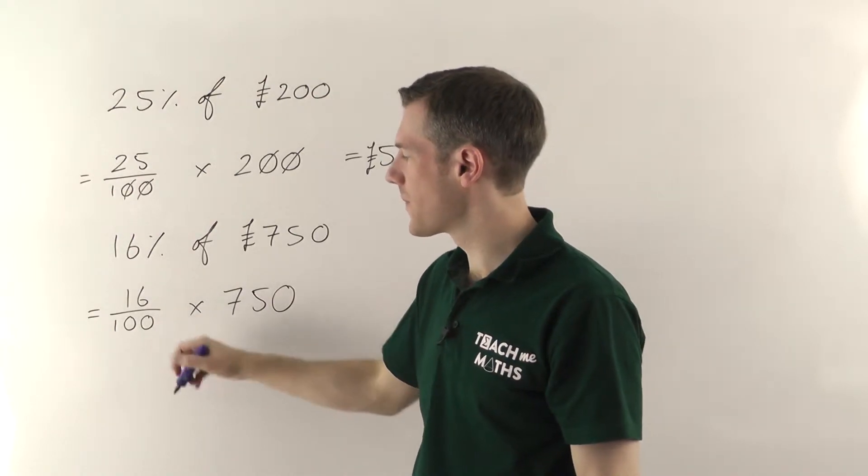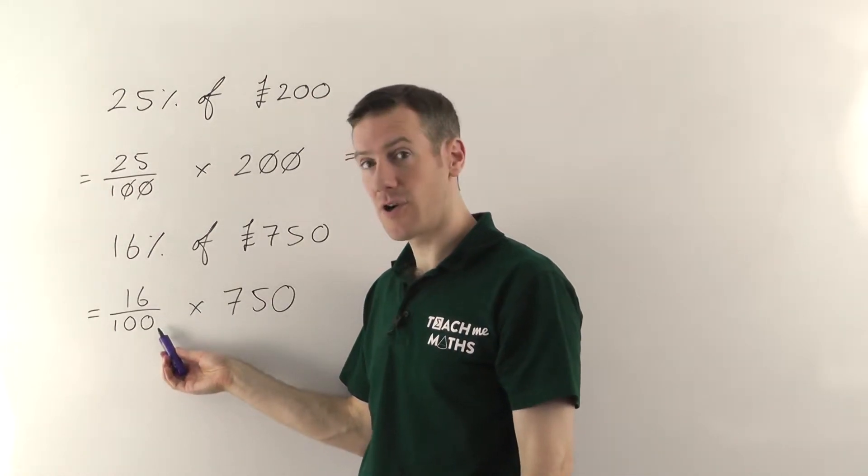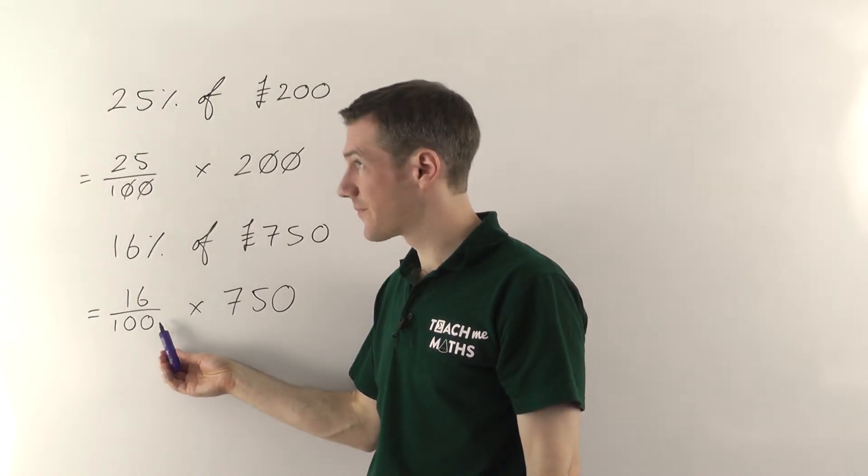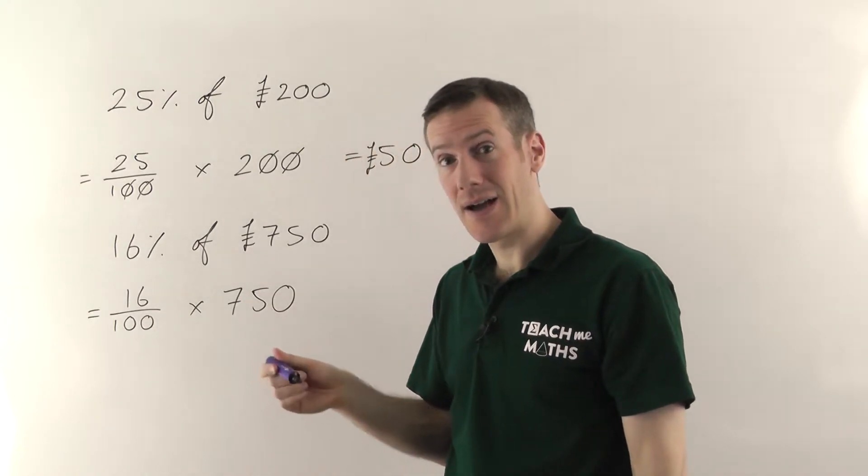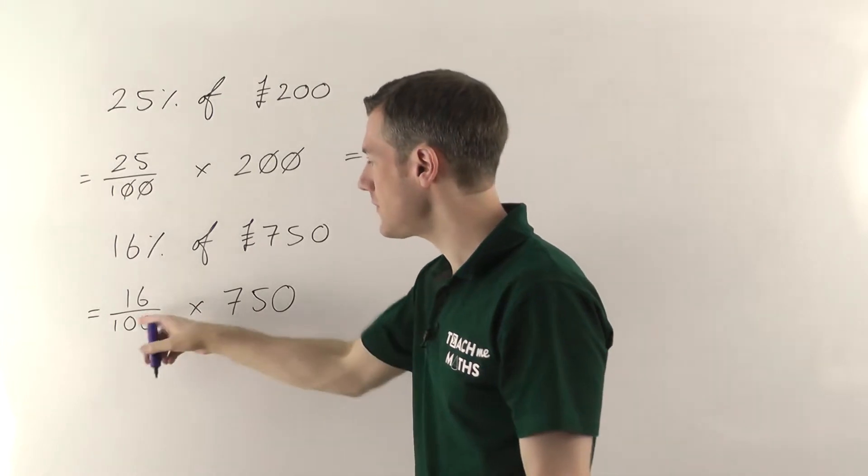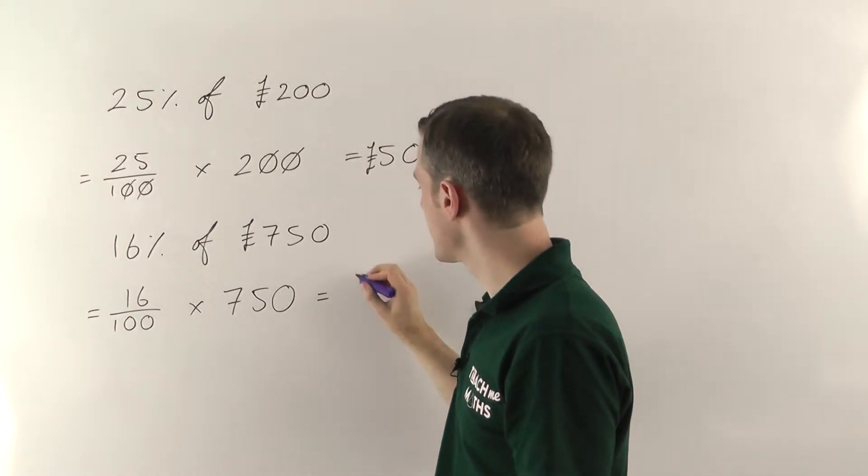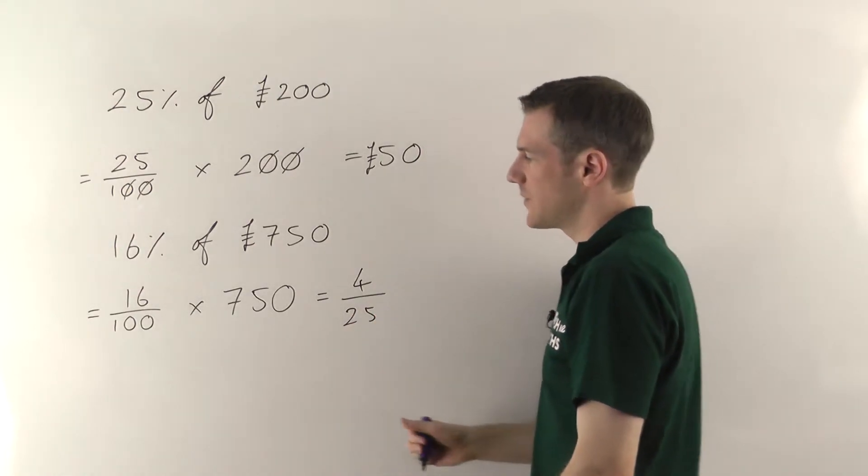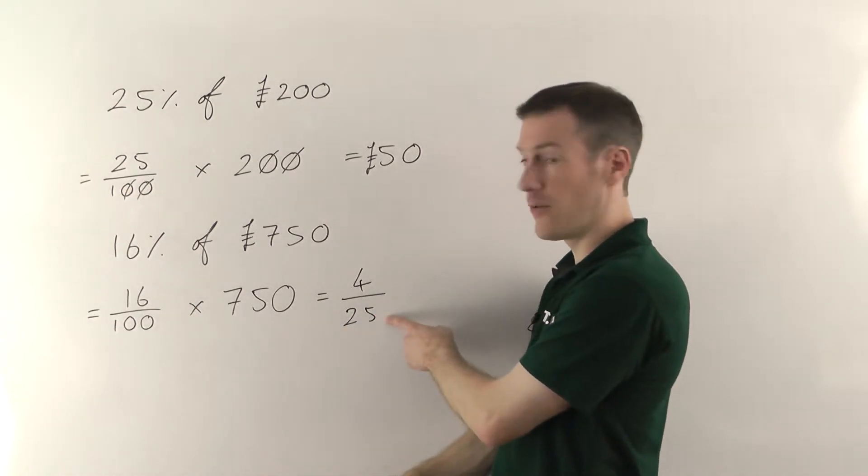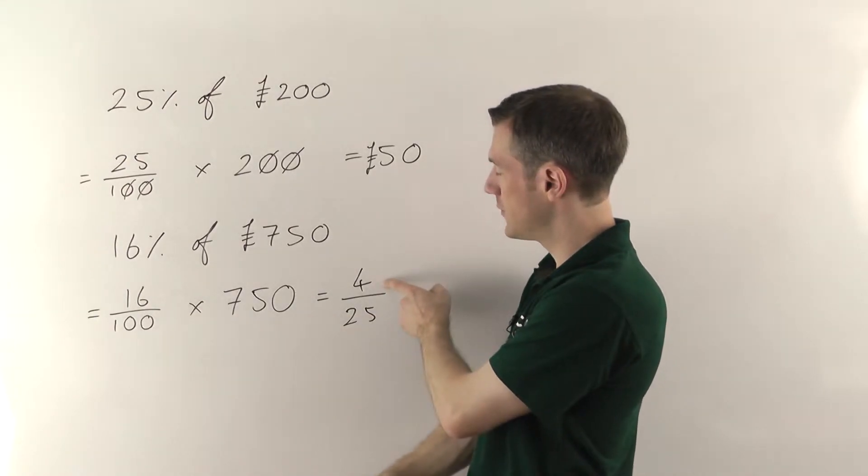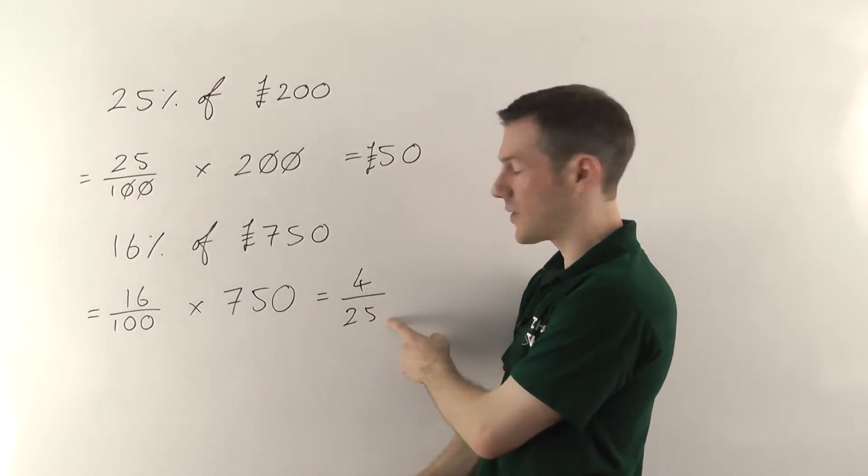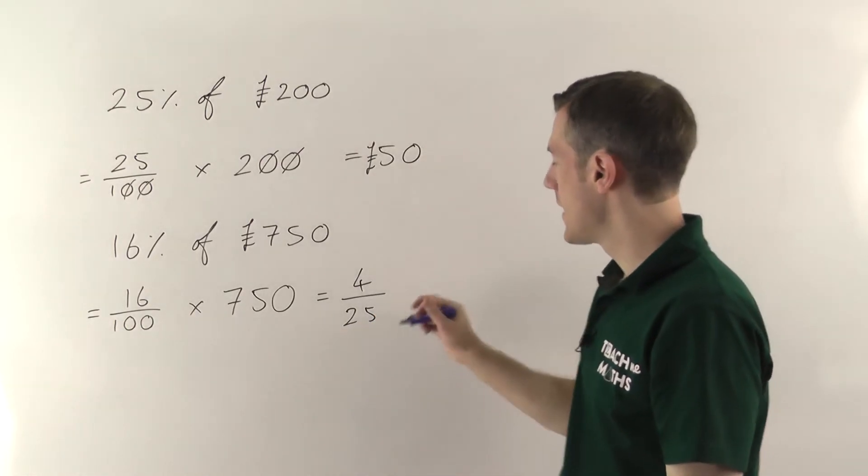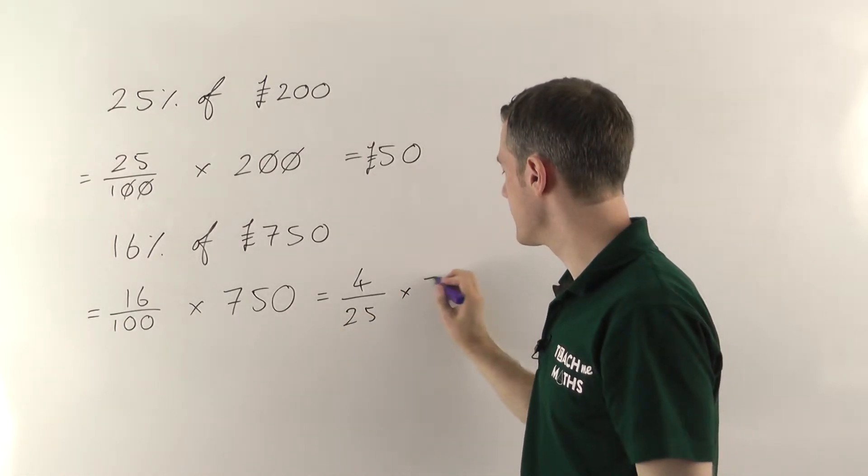So 16 over 100, well I can halve the top and the bottom because they're both even. That would give me 8 over 50 and in fact I could then do it again, I'll get 4 over 25. So 16 over 100 cancels down to 4 over 25. Effectively we've divided the top and the bottom by 4. 4s into 16 go 4 times, 4s into 100 go 25 times. 25 4s are 100. And that's still going to be times by 750 here.